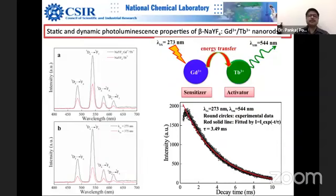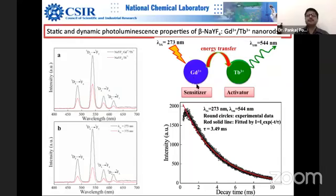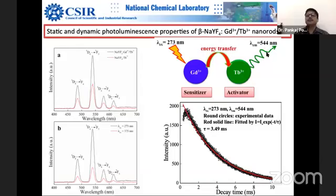That was actually the work of two to three other high-quality papers prior to this work. Having perfected the science of making these materials, we then thought, let us go ahead. So basically this is a system where gadolinium works as a sensitizer and terbium acts as an activator. There is an energy transfer between these two cations, and finally we have emission around 544 nm — that's the strongest emission as you can see here.